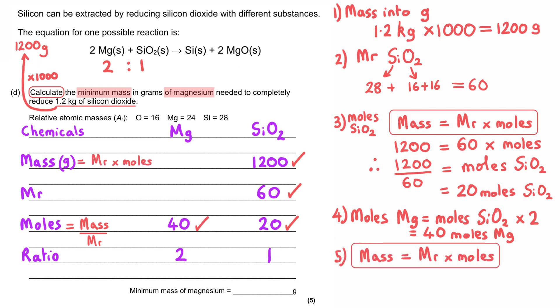And then for the final mark, we need to work out what mass this number of moles of magnesium will have. And so again, we need to return to the mass equals relative formula mass multiplied by moles equation. This time we're using it in its more straightforward form, because the mass of magnesium is what we want to work out, and this is 24 multiplied by 40, which gives us 960 grams of magnesium.